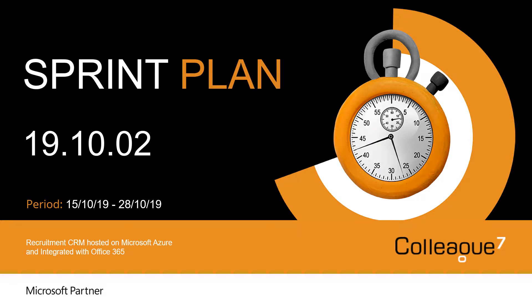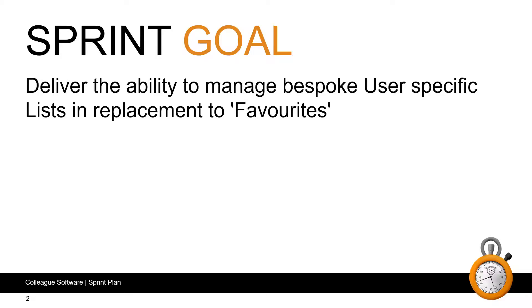Hello and welcome to Colleague 7's Sprint Plan for 19.10.02. This will cover the work undertaken between the 15th October to the 28th October. Our sprint goal for this sprint will be to deliver the ability to manage bespoke user specific lists in replacement of favourites.